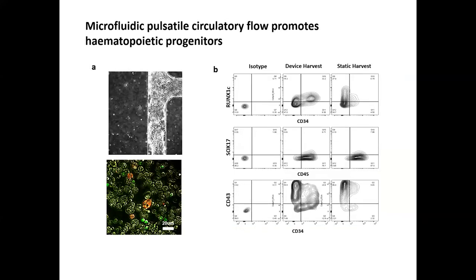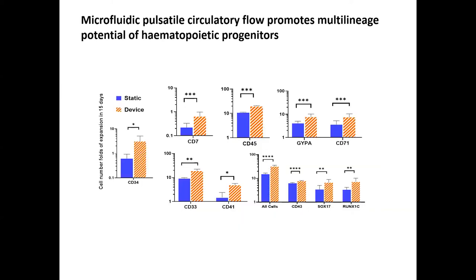Analysis of device-harvested blood progenitor cells at day 18 of differentiation showed that circulatory flow promoted the release of proliferating RUNX1C-CD34 double-positive blood progenitor cells into the circulation from SOX17-mCherry-positive arterial-like structures lining the microfluidic channels. We also compared the multi-lineage potential of device-harvested versus static-cultured hematopoietic progenitors. RUNX1C-CD34-mCherry-positive precursor cells could form most blood cell types including monocyte, macrophage, granulocyte, erythrocyte, and megakaryocytic progenitors. Pulsatile circulatory flow also particularly promoted CD34-positive cell expansion.